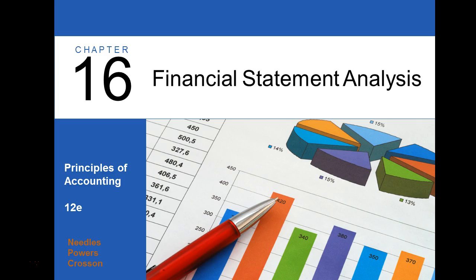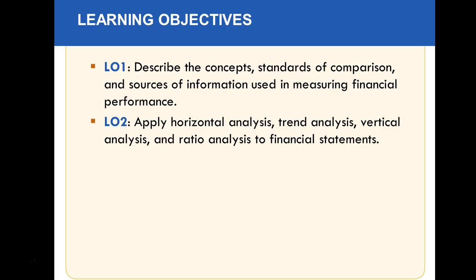Our last chapter of this course is talking about Chapter 16. We're going to look at how we interpret financial statements. We're going to spend some time looking at various ratios and some aspects I want you to understand for this chapter. We talked about some ratios in this class already, so a little bit is going to be a review. We're going to look at comparisons, horizontal analysis, trend analysis, vertical analysis, and ratio analysis.